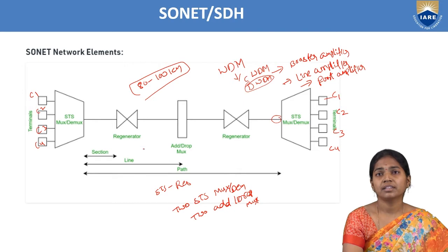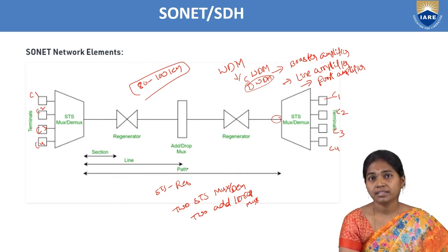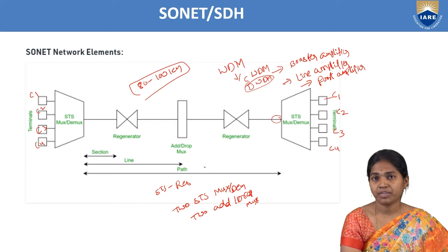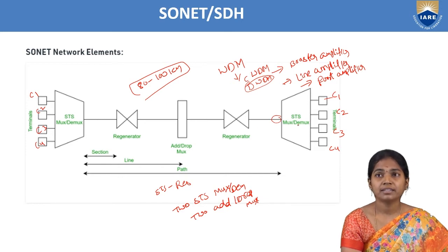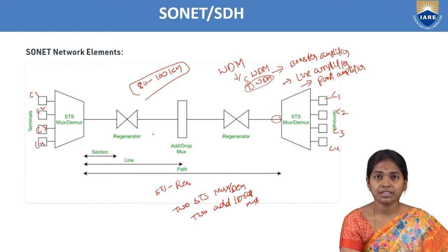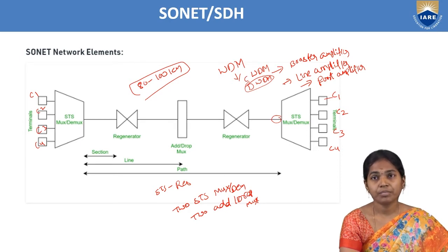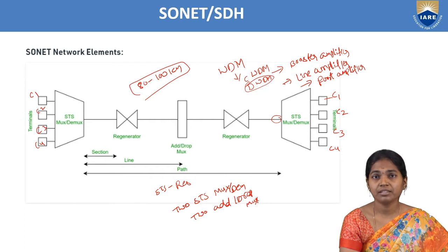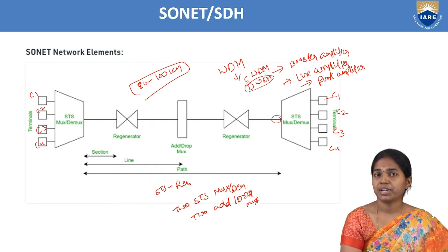Path provides the end-to-end connection — the path between end-to-end STS multiplexer to STS demultiplexer. Section provides the optical link between neighboring devices. Line is STS to add drop multiplexer, STS to STS, or add drop multiplexer to add drop multiplexer. Path provides the end-to-end connection from STS multiplexer to demultiplexer.